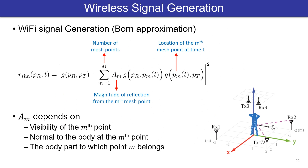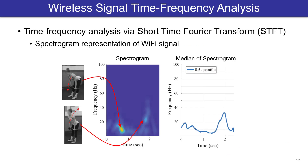Finally, we translate the video to RF. We simulate the wireless signal that would have been measured if the person in the video was near Wi-Fi links. For this purpose, we use Born approximation, which efficiently calculates the reflected paths off of each 3D body point and then combines them to obtain the received signal. We then use short-time Fourier transform to calculate the spectrogram of the generated RF signal, which contains key information on motion of different body parts and can be used for feature extraction and classification.